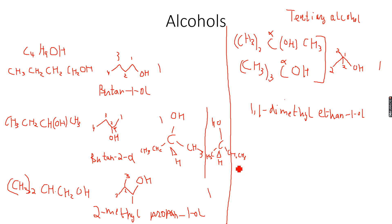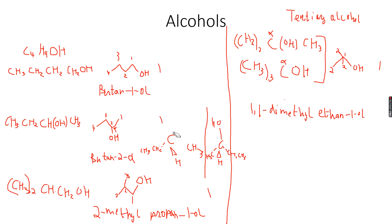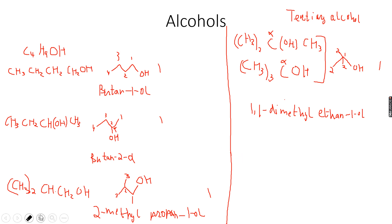It will exist as non-superimposable mirror images like this. I drew a wrong three-dimensional shape — this bond should be a dashed bond, because we always need to make three-dimensional structures. So these are two optical isomers. Even though butan-2-ol is one structural isomer, this molecule is going to have two optical isomers, because whenever there is a chiral center we have two optical isomers.